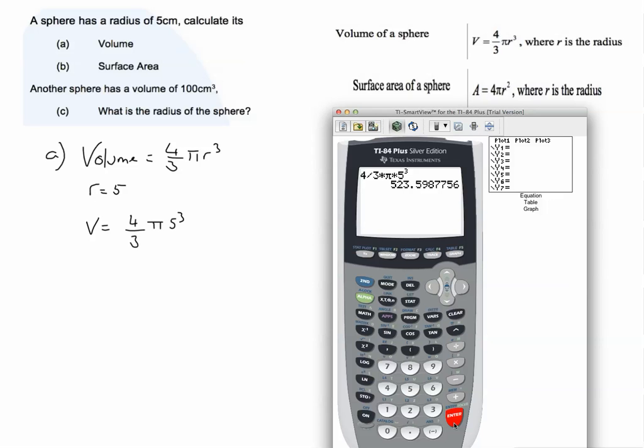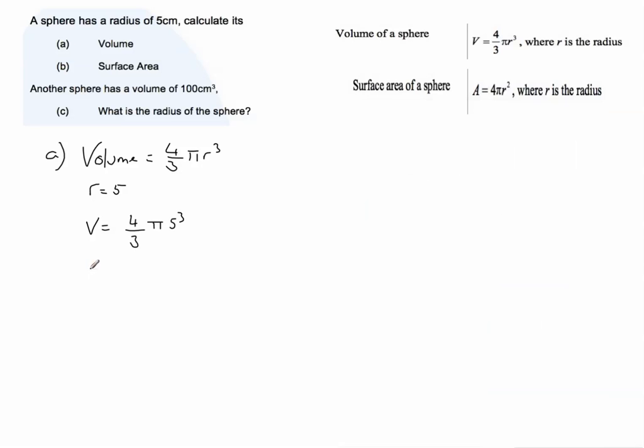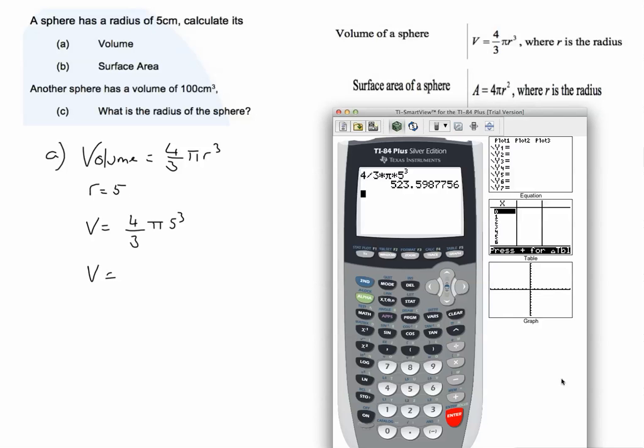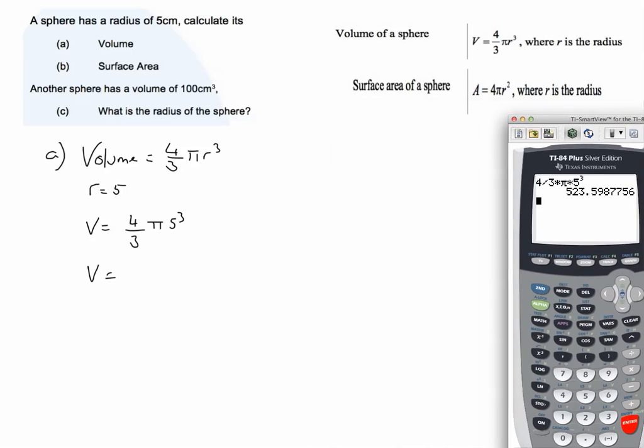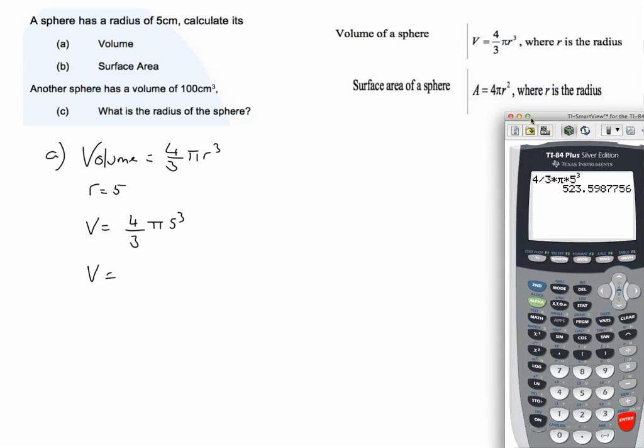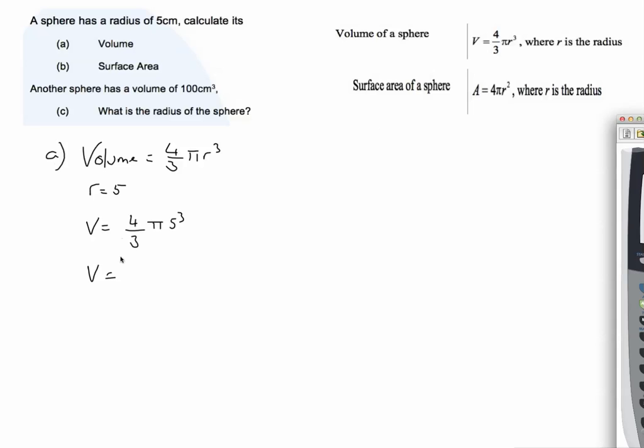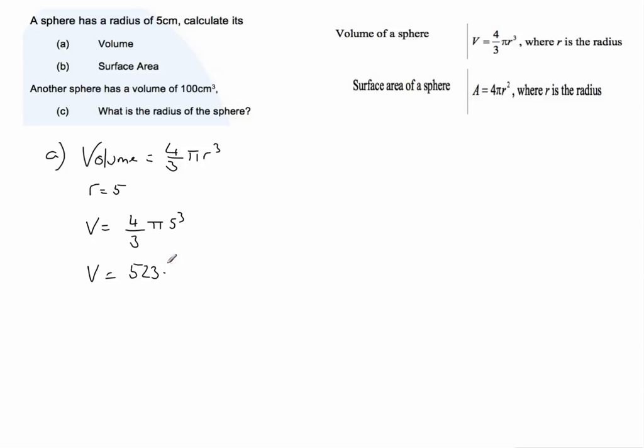And then we've got our answer there, 523.5987756. So it's always good advice to write the whole answer to that question down. I'll just get that back on the screen. So it's 523.5987756.